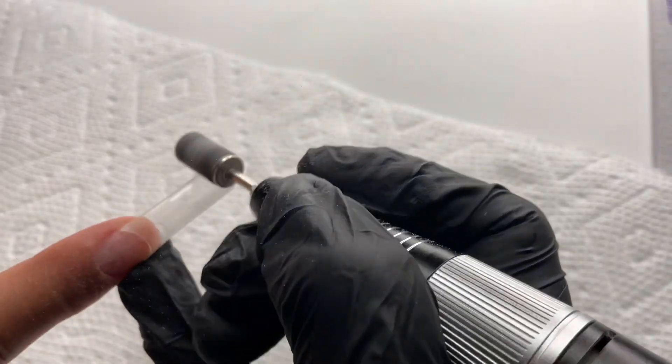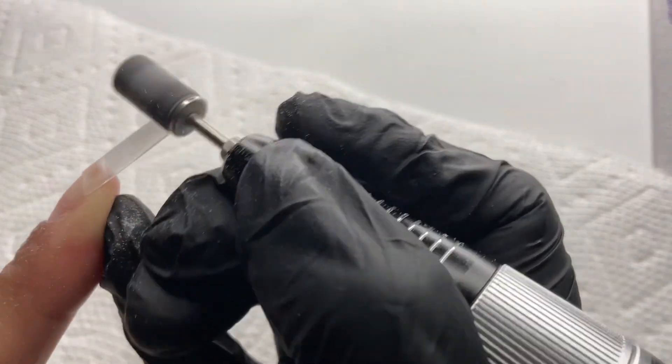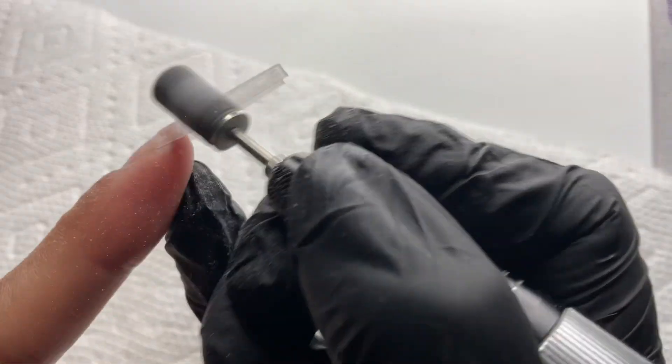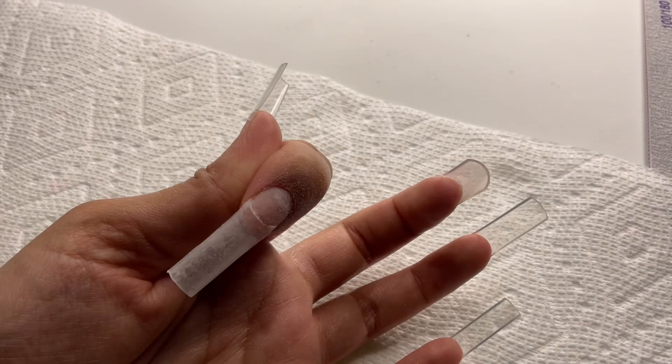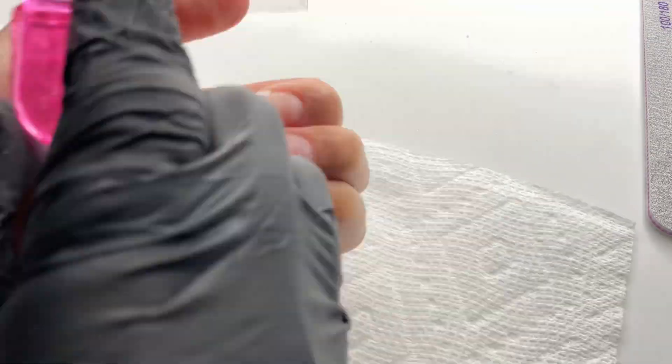Next we are going to blend the nail tip and remove the shine. When blending the nail tip with the natural nail, you want to make sure you're only blending on the plastic nail tip itself. Then just taking a manicure brush and getting rid of all that dust.